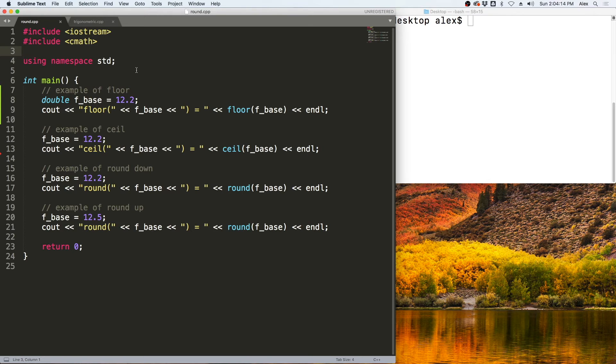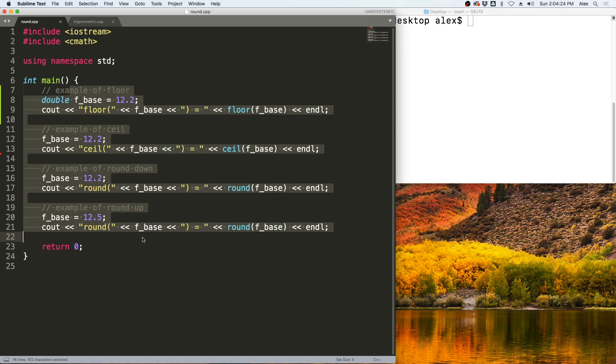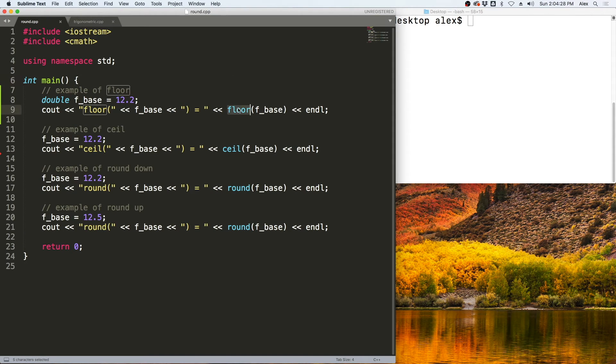Let's take a look at rounding from a program. Again, we have the CMath library being included up here using the preprocessor. Down here, we have some examples of the rounding functions. The first one we are going to see is Floor, which will round this 12.2 down to 12. We then have Ceil, which will round this 12.2 up to 13. Then we have an example of rounding down, which if you use round on a number below 0.5 for the mantissa, then it will round down. So we will expect 12 out of this one. If the mantissa is 0.5 or greater, it will round up.